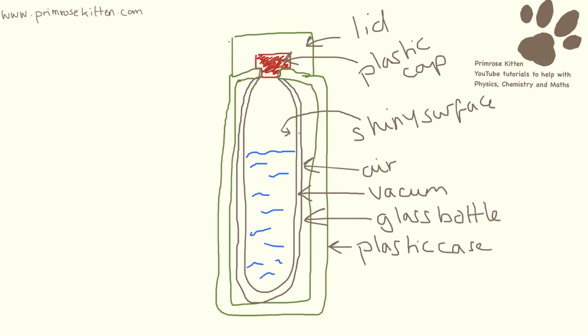So this is a vacuum flask here and it has certain design features. It has a plastic lid on the top and a plastic cap in the middle. It has a shiny surface on the inside and then there is a little air gap in here. There is a vacuum in here, there is a glass bottle on the inside, and there is a plastic case on the outside.